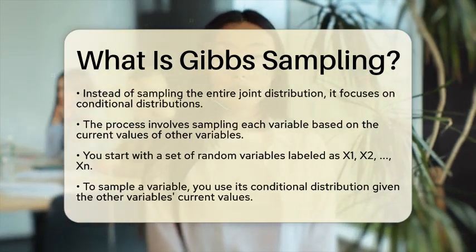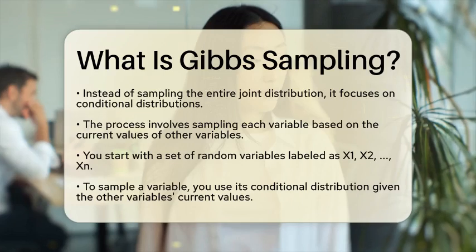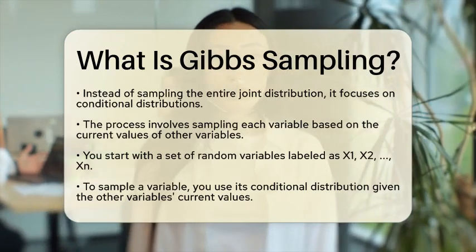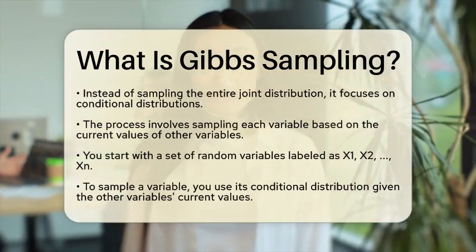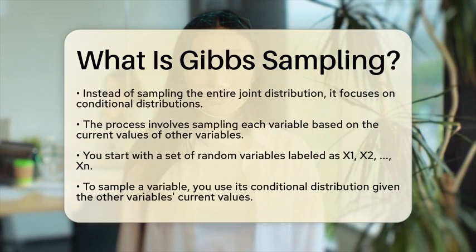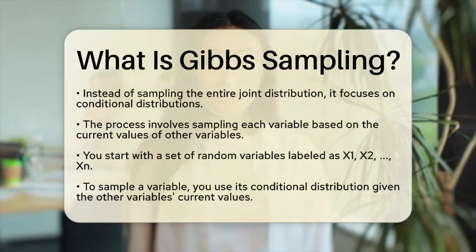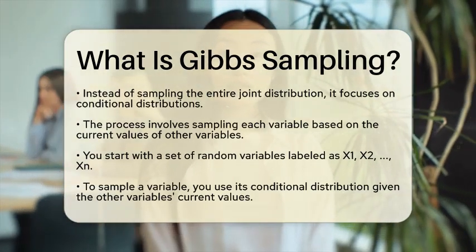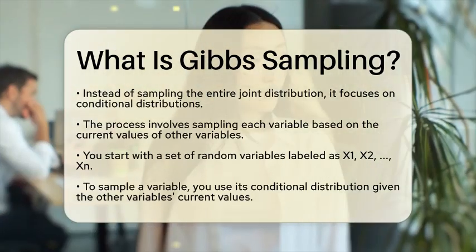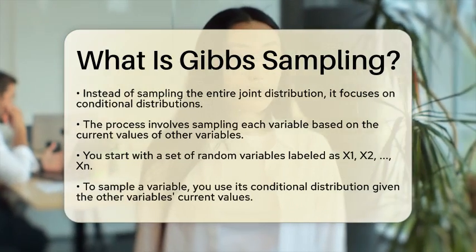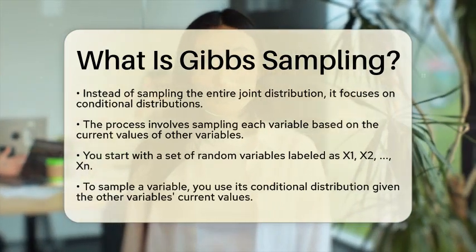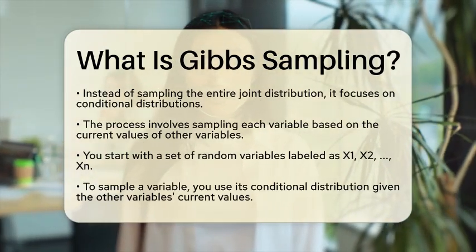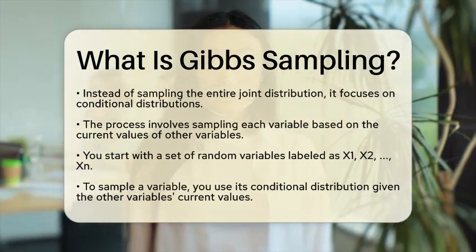The process follows a simple algorithm. First, you initialize your random variables by assigning them starting values. Next, you iterate through each variable, sampling a new value from its conditional distribution based on the current values of the other variables. This cycle continues until the samples converge to the target joint distribution.